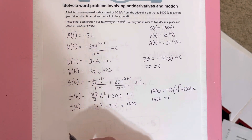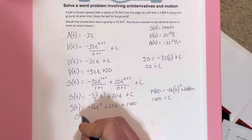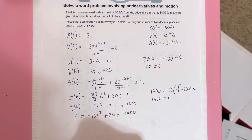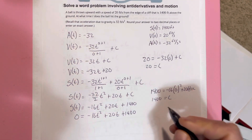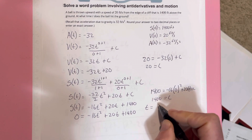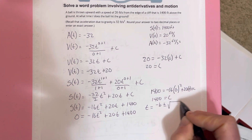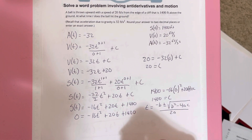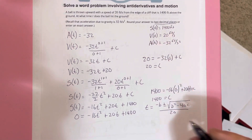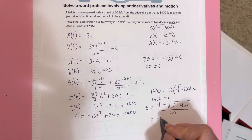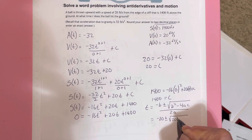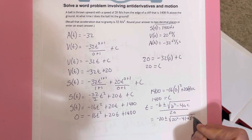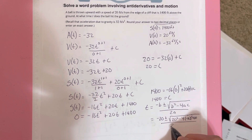Now I want to find out when the ball hits the ground, so position equals 0: 0 equals negative 16t squared plus 20t plus 1,400. I'll use the quadratic formula: t equals negative b plus or minus the square root of b squared minus 4ac, all over 2a. Here b is 20, a is negative 16, and c is 1,400. So t equals negative 20 plus or minus the square root of 20 squared minus 4 times negative 16 times 1,400, all over 2 times negative 16.